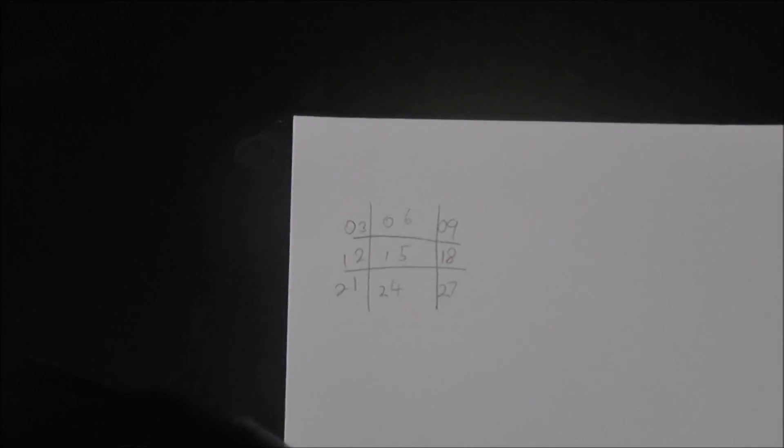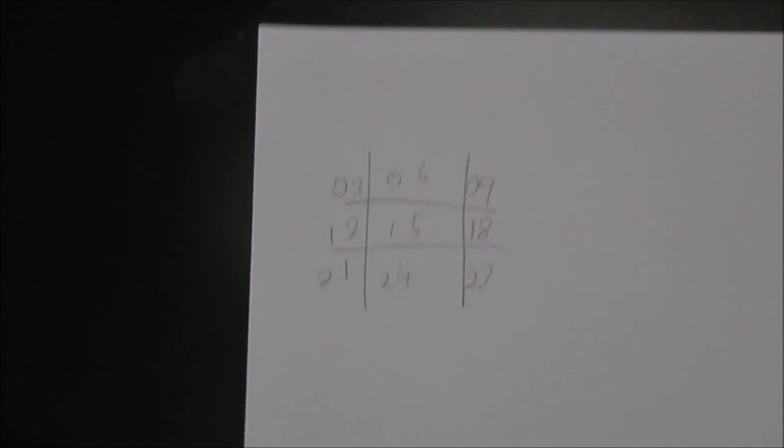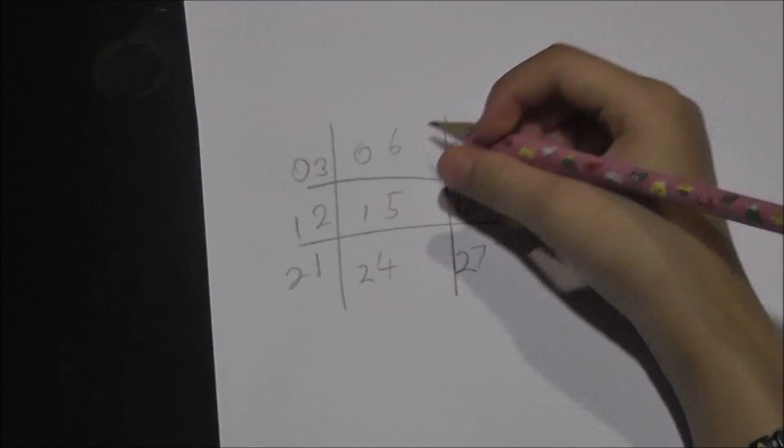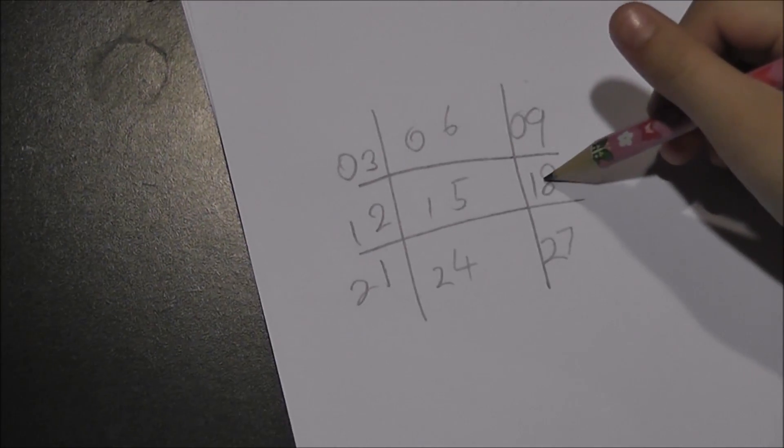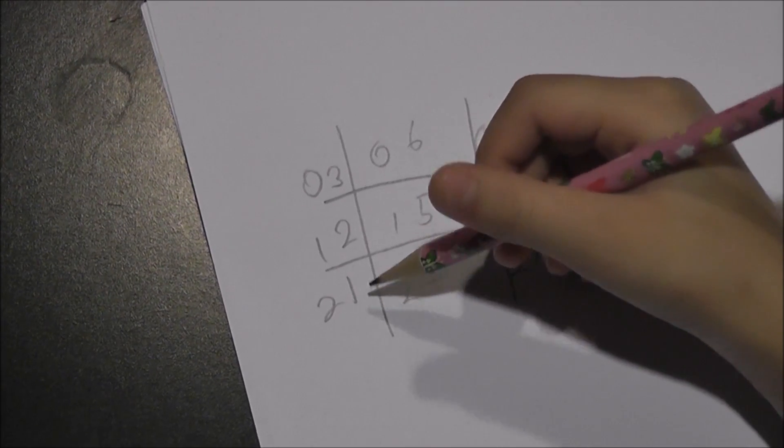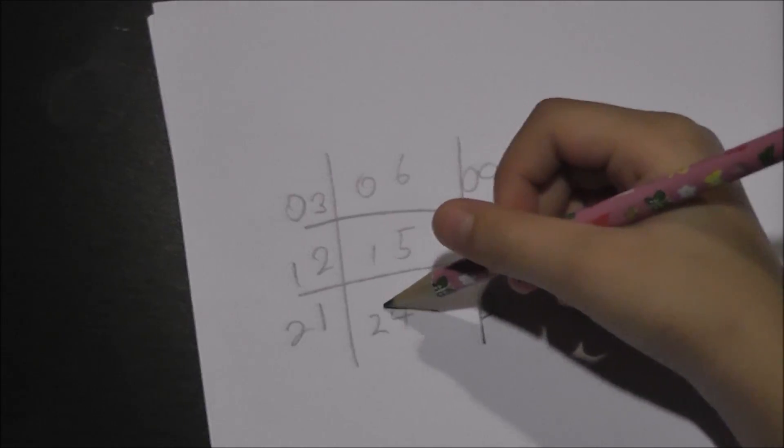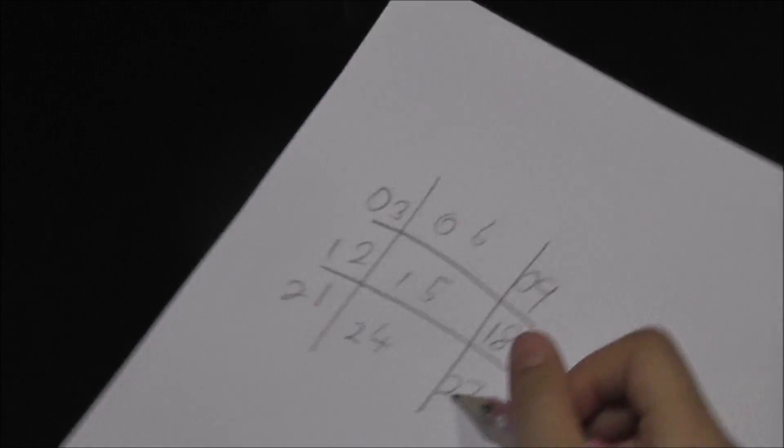So, I'm going to count it now. 3, 1, 3. 3, 2, 6. 3, 3, 9. 3, 4, 12. 3, 5, 15. 3, 6, 18. 3, 7, 21. 3, 8, 24. 3, 9, 27 and 3, 10 is 30.